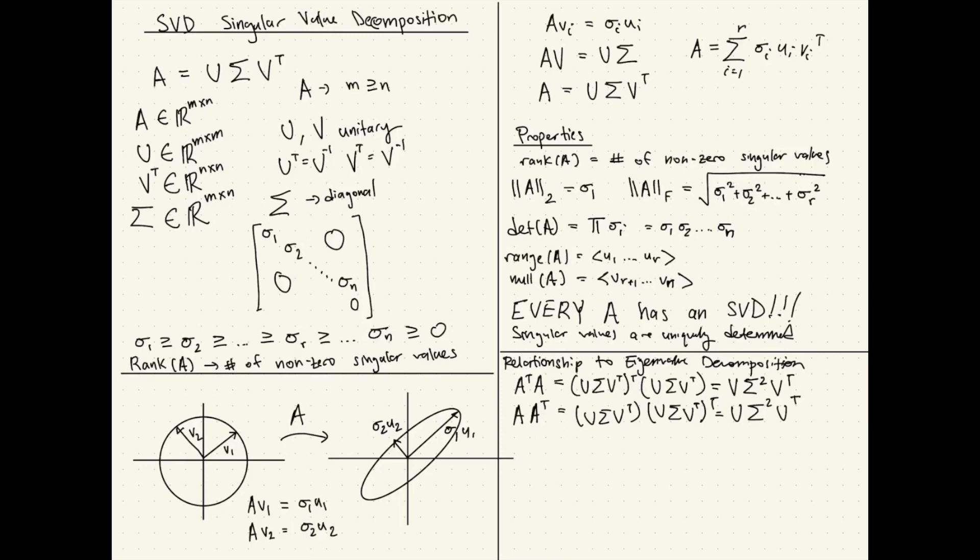Sigma squared, I hope you can understand, that means sigma times sigma. On the diagonals, you have the squares of the singular values.